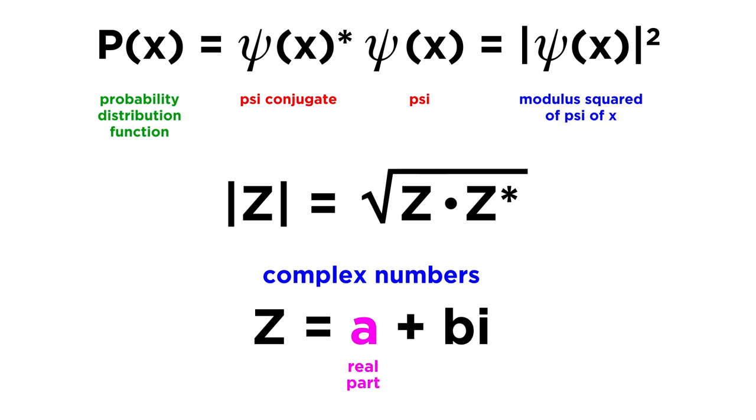Three, operators that represent what we refer to as observables are Hermitian, or self-adjoint. This is the fancy name for operators whose eigenvalues are real numbers. Position and momentum are Hermitian operators, because any measurement of these parameters must be a real number,